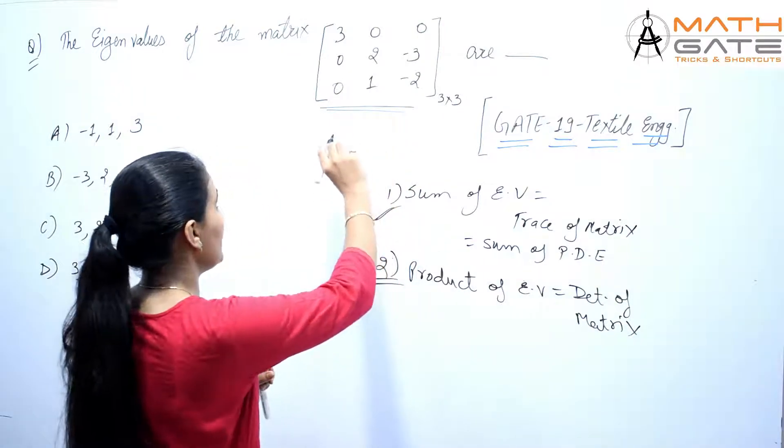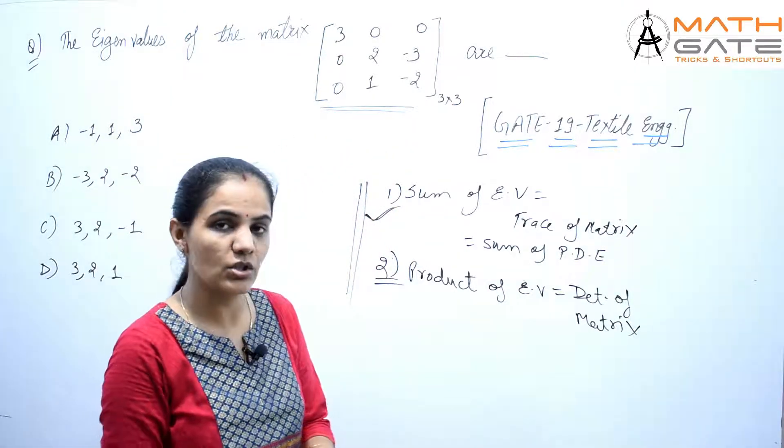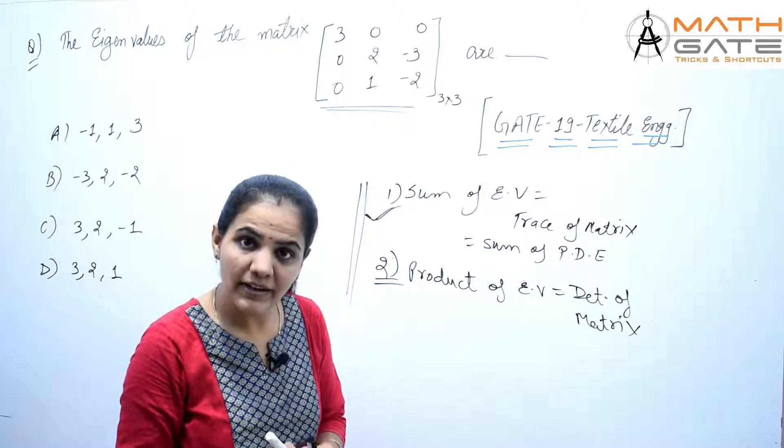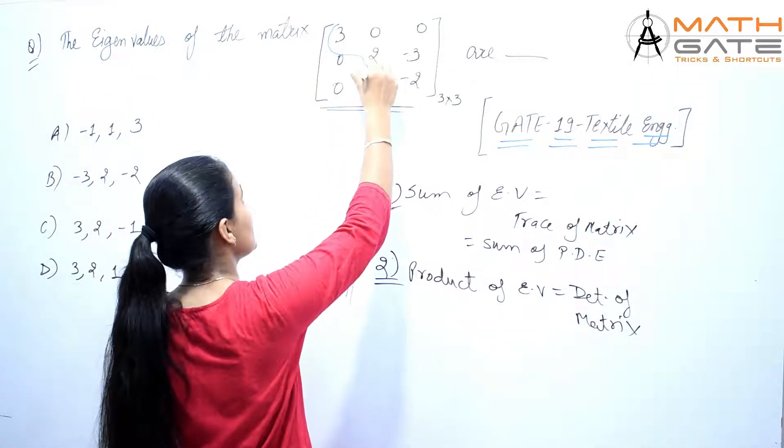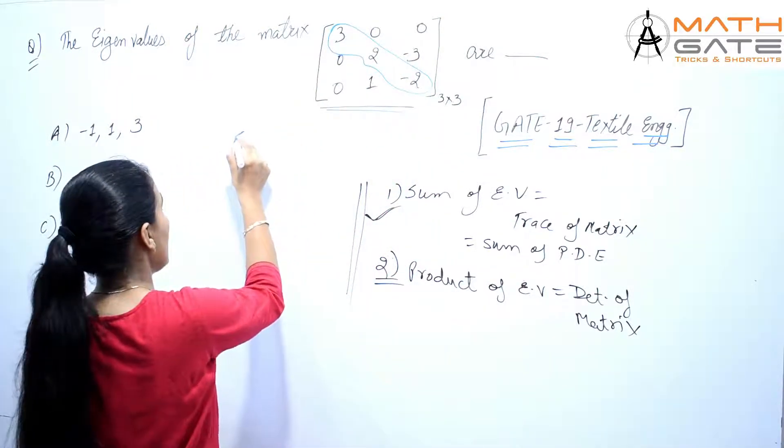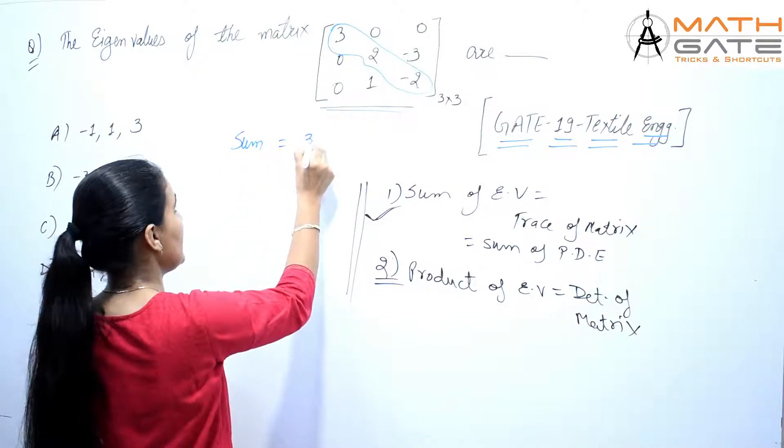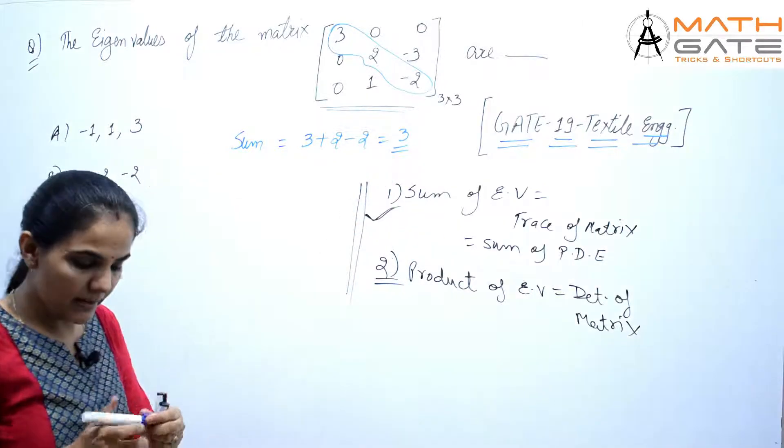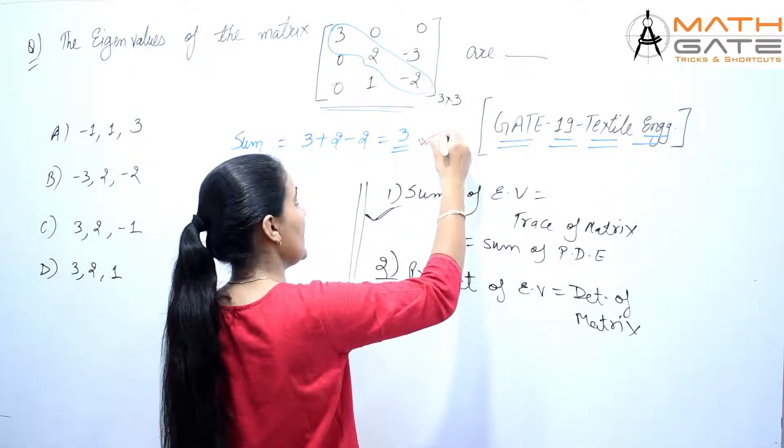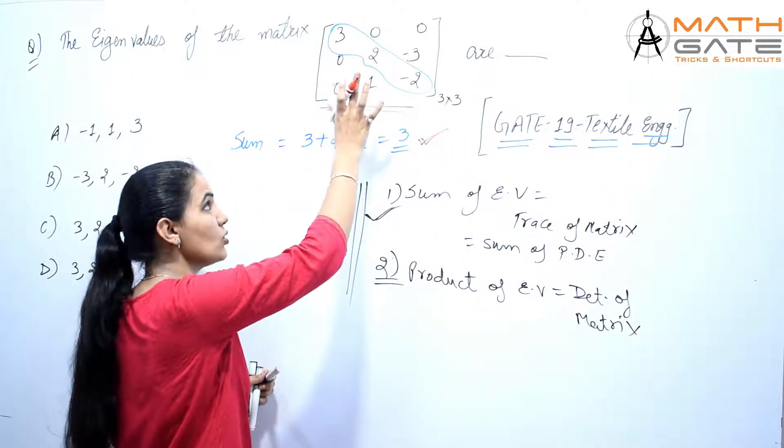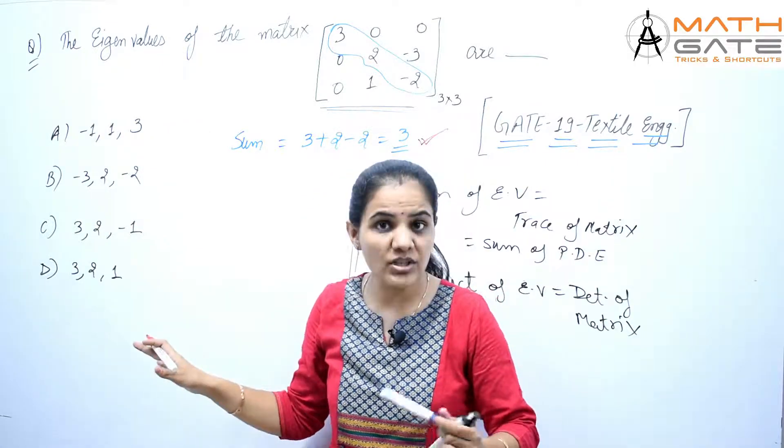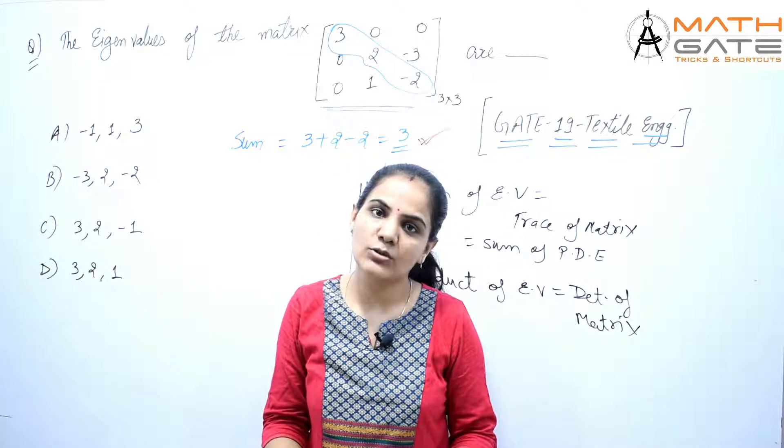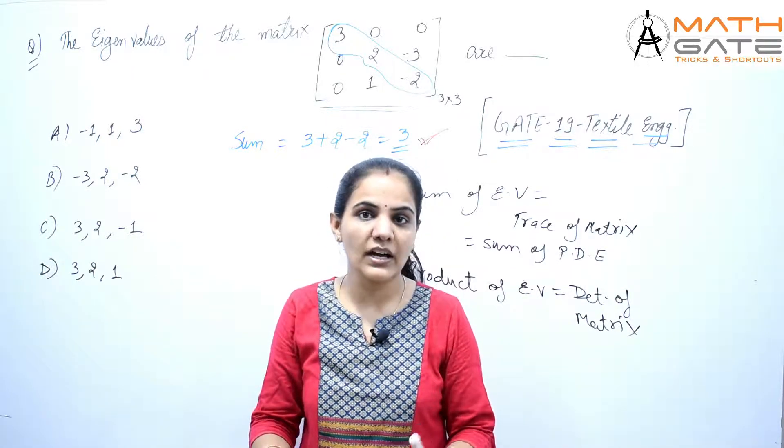Now we go to the question. The matrix given is [3, 0, 0; 0, 2, -3; 0, 1, -2] and we need to find the eigenvalues. So the first task is sum of eigenvalues. Sum of eigenvalues means trace, which is sum of the principal diagonal elements. So the sum will be 3 plus 2 minus 2, which equals 3. Now, let's check the options. If only one of the four options has sum equal to 3, then that will be our answer. But if more than one has sum 3, then we'll use product.